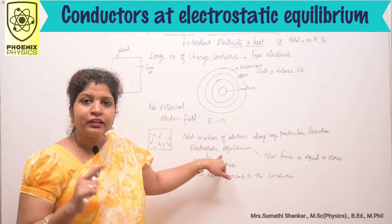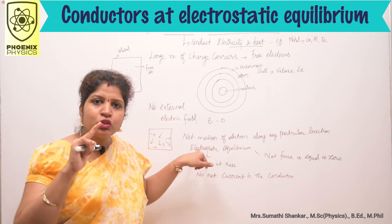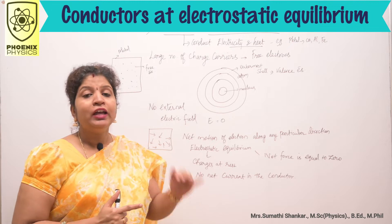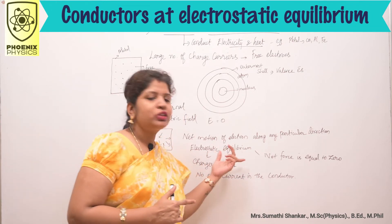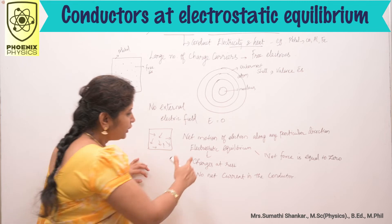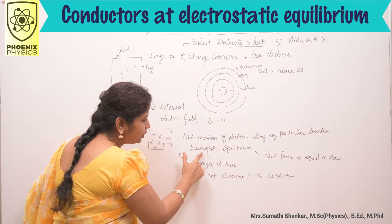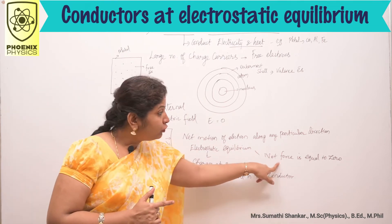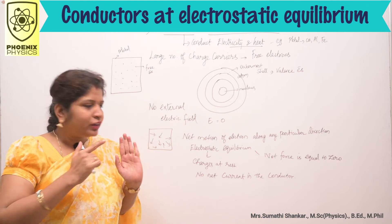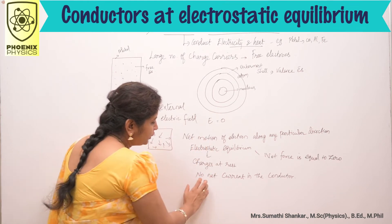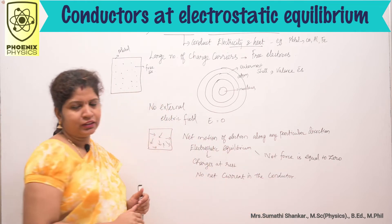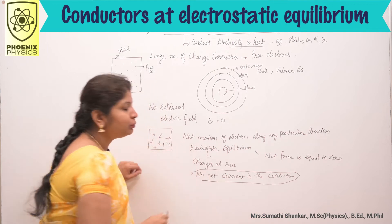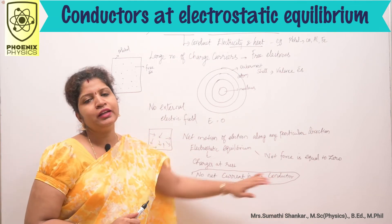So, how do you say the conductor is at electrostatic equilibrium? When there is no net motion of electrons along any particular direction, the conductor is said to be in electrostatic equilibrium. Electrostatic means charges are at rest. Equilibrium means net force is equal to 0. So at electrostatic equilibrium, there is no net current in the conductor. This is very very important.